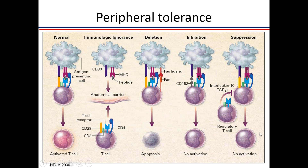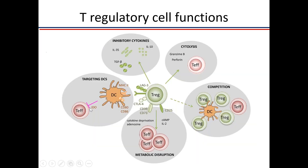Regulatory T cells prevent effector T cell proliferation and activation. They dampen immune responses through multiple mechanisms: producing inhibitory cytokines like IL-10 and IL-35; acting on antigen-presenting cells to produce inhibitory chemicals like IDO; and cytokine deprivation — T regulatory cells have very high-affinity IL-2 receptors, so they mop up available IL-2, preventing effector T cell proliferation. T regulatory cells can also outcompete effector cells for access to antigen-presenting cells.